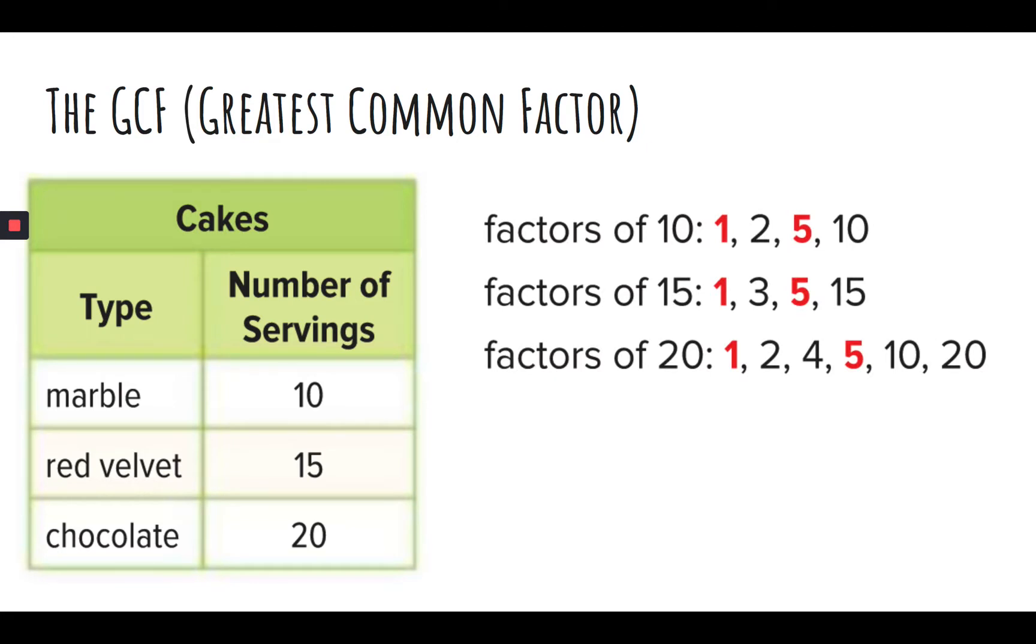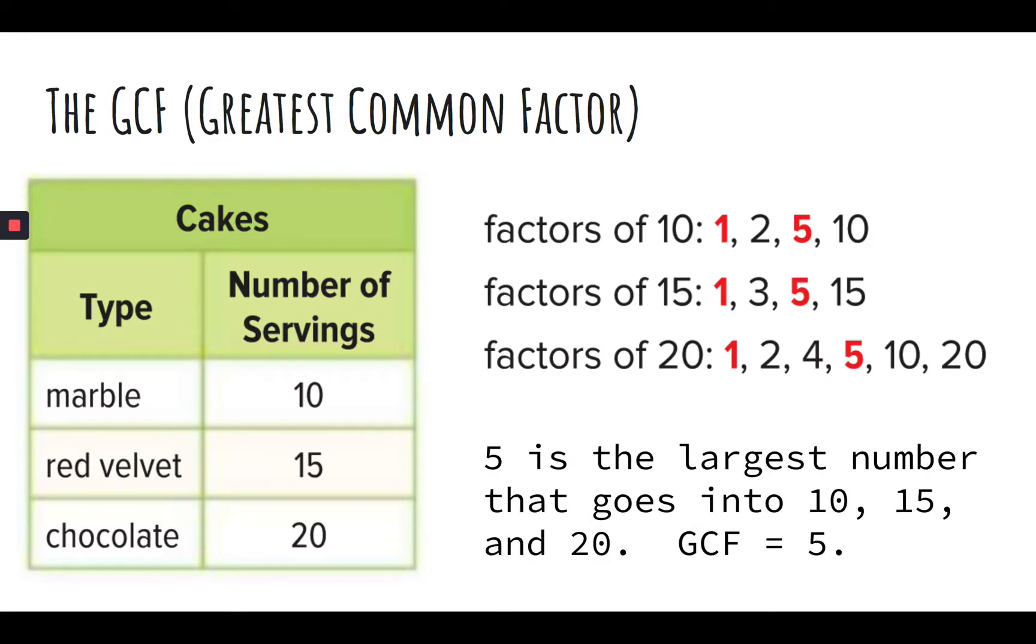As you probably know, factors of 10 include 1, 2, 5, and 10. Factors of 15: 1, 3, 5, and 15. Factors of 20: 1, 2, 4, 5, 10, and 20. In this case, these three numbers have two common factors, both 1 and 5. But the greatest one, the largest common factor, is 5. So if you were asked to find the GCF of these three numbers, the answer is 5. It is the largest number that goes into all three.